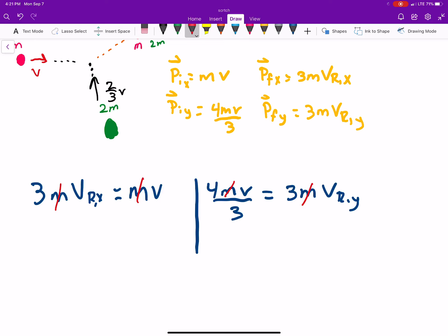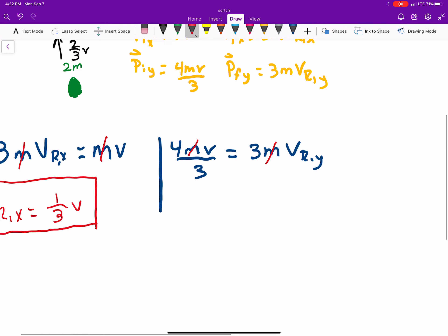And then, all we need to do is solve for our velocity. So, velocity resultant in the x direction is just 1/3 of v. And, on this side, if we divide by 3, it's 4/9 v is equal to the resulting velocity in the y direction.